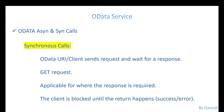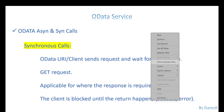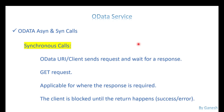Those are coming under synchronous calls only. We didn't mention anything specific to the call — we simply called the OData service with get entity set. Those are synchronous calls. The idea of a synchronous call is the client sends a request and waits for the response from your backend system — client to server — waiting for a response.